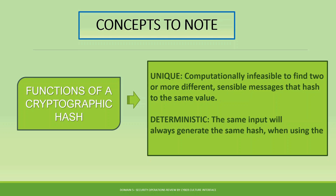Hashing is also deterministic, meaning the same input will always generate the same hash. For example, if I send a Microsoft Word document to someone and tell them I used MD5 to hash it, and I send them the hash value — if they hash their own copy of the same document using MD5, they will get the same hash value, even if we are in different locations or using different devices.